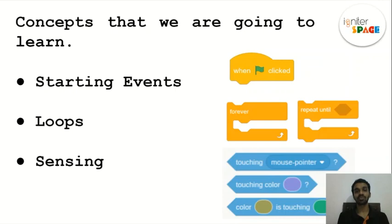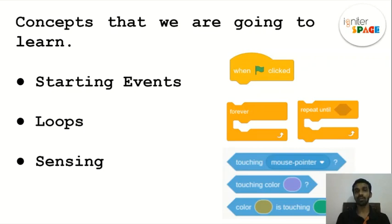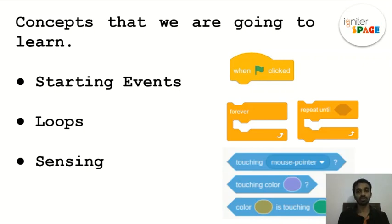Today we are learning about starting events. A starting event is like the clap or starter gun in a race — when you hear the sound of the gun you start running. A starting event gives a signal to start the program; it's like a start button in a game. When the start button is clicked, the game starts.